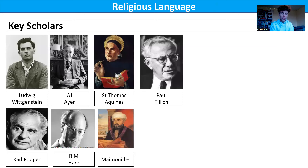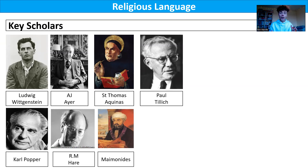As we did in our first video on religious language, I wanted to introduce you to some of the key scholars we'll be talking about today, because in order to secure that A star it is essential that your arguments are grounded in scholars and what they have said. Please make sure every paragraph has got a reference to a scholar, to a text, to a source of wisdom and authority. We'll be looking at Wittgenstein and his idea of language games, and we'll also be meeting A.J. Ayer, who is a key logical positivist.